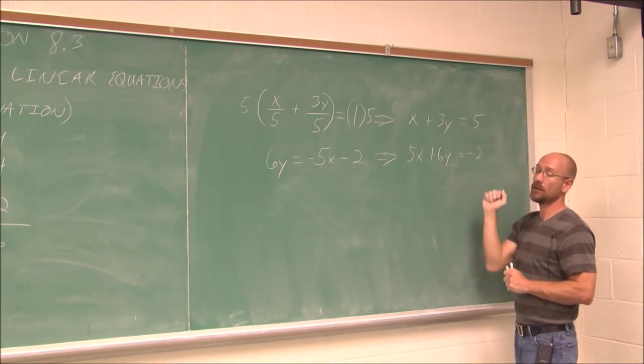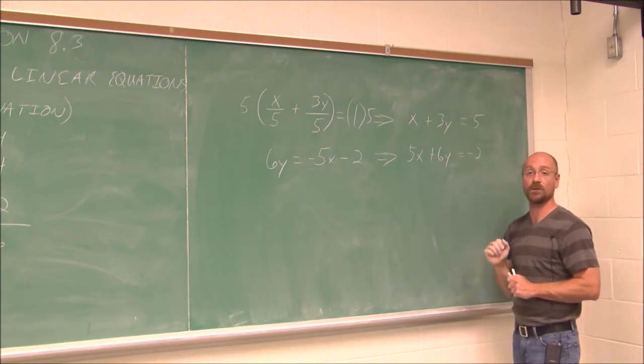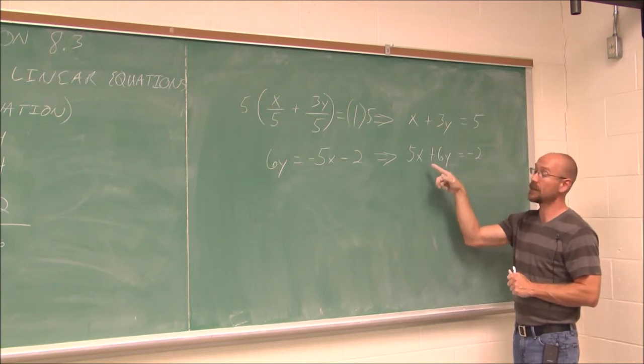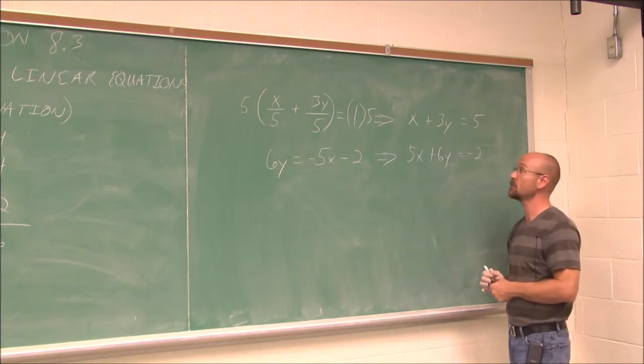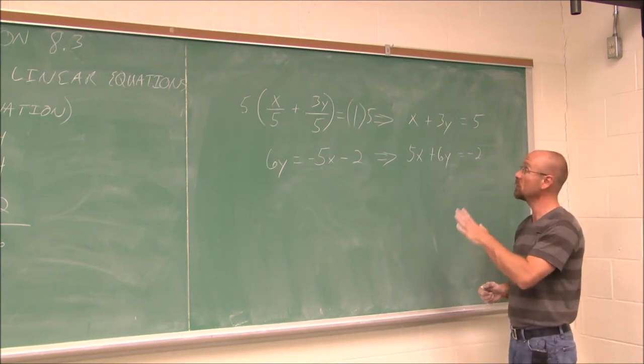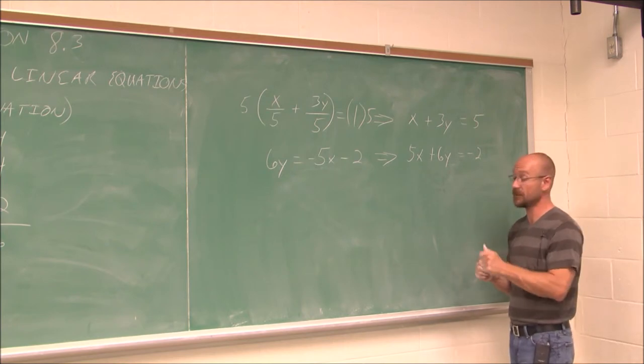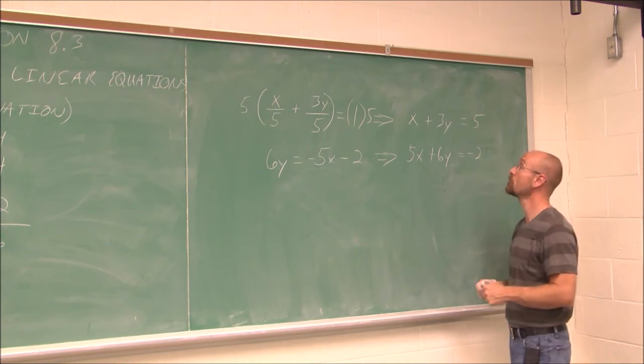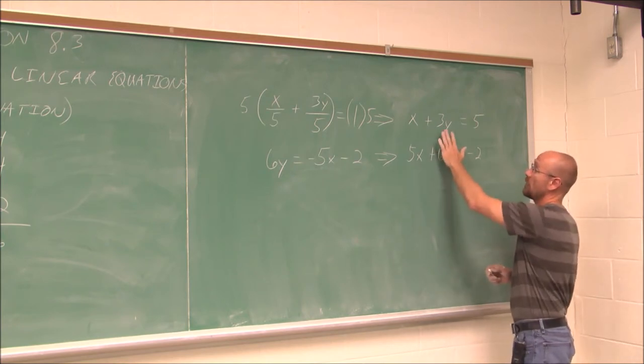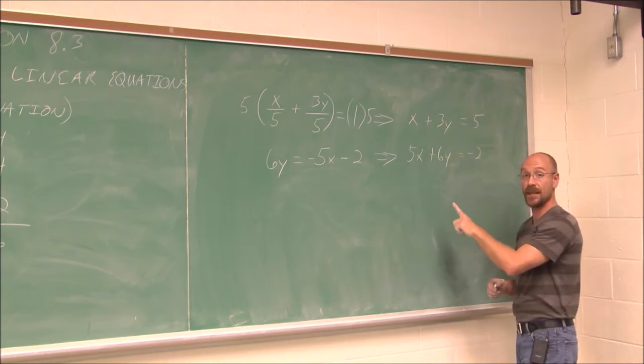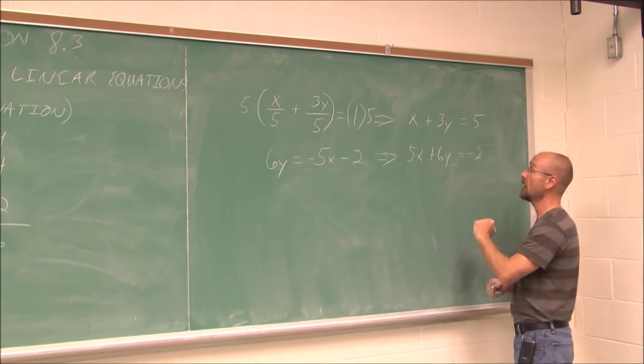But maybe I want to eliminate the y's. And I'm actually going to choose to eliminate the y's here instead of the x's, because we did the x's in the last one. You can choose any variable. Whichever one you feel is going to be the easiest, that's the one you should choose. So I'm going to eliminate the y values, which means these two values have to be the same value of opposite sign.